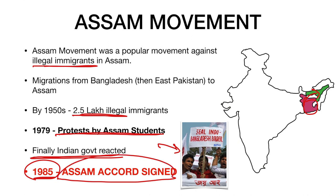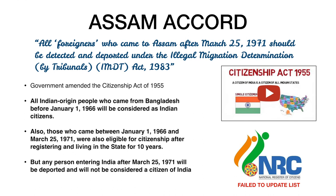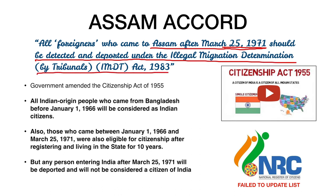What is this Assam Accord and how is it making a difference to Assam's people? The Assam Accord contained a provision that all foreigners who come to Assam after March 25, 1971 should be detected and deported under the Illegal Migration Determination by Tribunals — that is, the IMDT Act, 1983. So the government said it would find who the illegal migrants are and deport them back to their country.